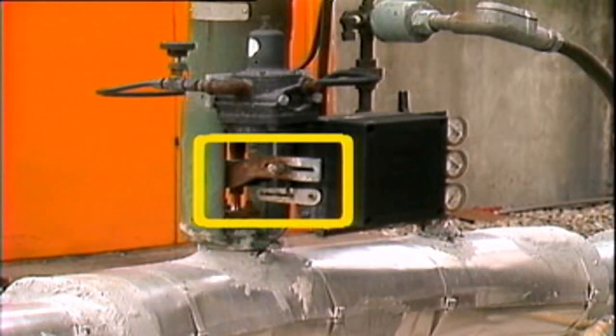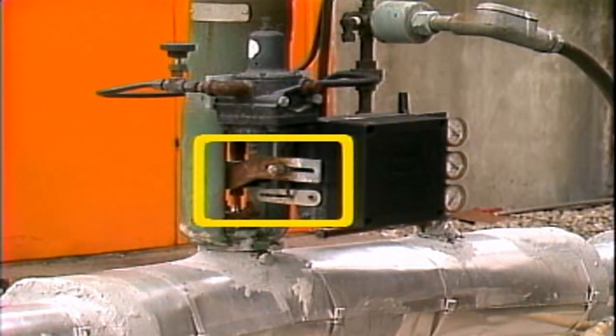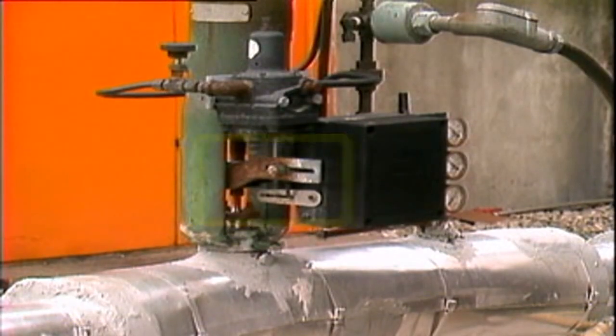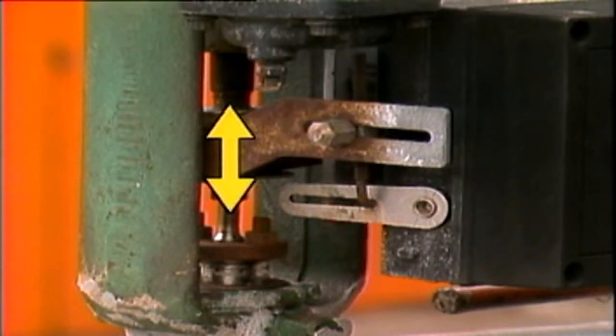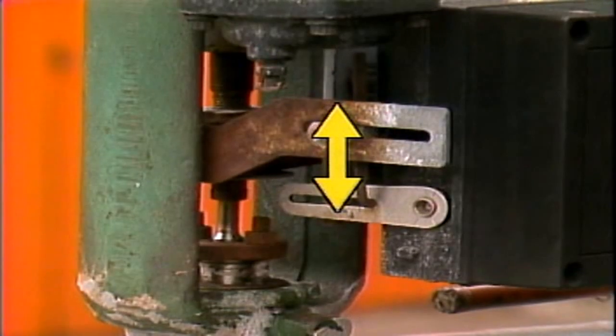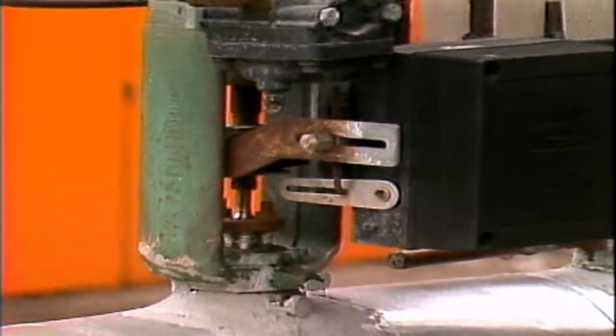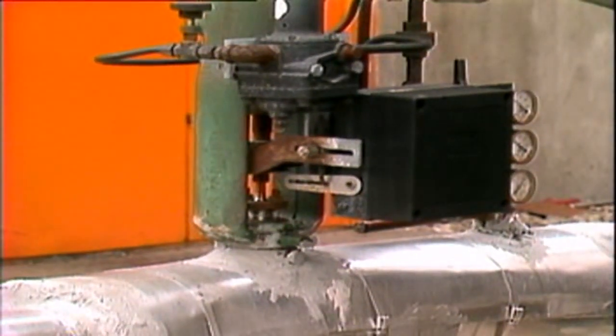A mechanical linkage joins the actuator stem to the positioner. This mechanical linkage may also be called a feedback linkage. As the actuator stem moves up or down, it also moves the linkage. The position of the linkage indicates to the positioner when enough movement has occurred to correspond with the air signal from the controller.